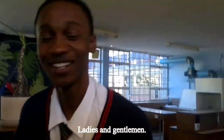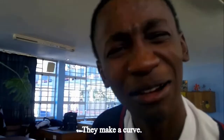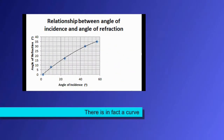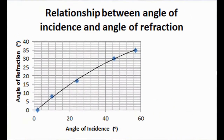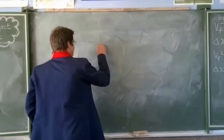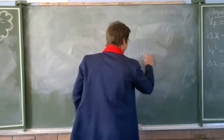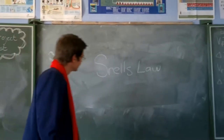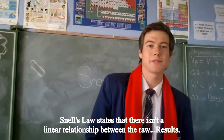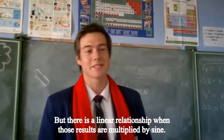Ladies and gentlemen, we got the results. Let's see what's funny. They'll make a curve on the graph. Oh my gosh, really? Of course it will make a curve on the graph. You don't need to use Snell's Law. Snell's Law states that there isn't a linear relationship between the raw results, but there is a linear relationship when those results are modified to sine.